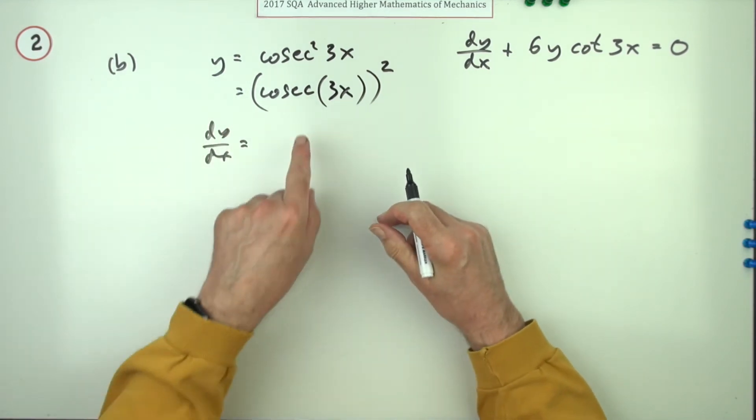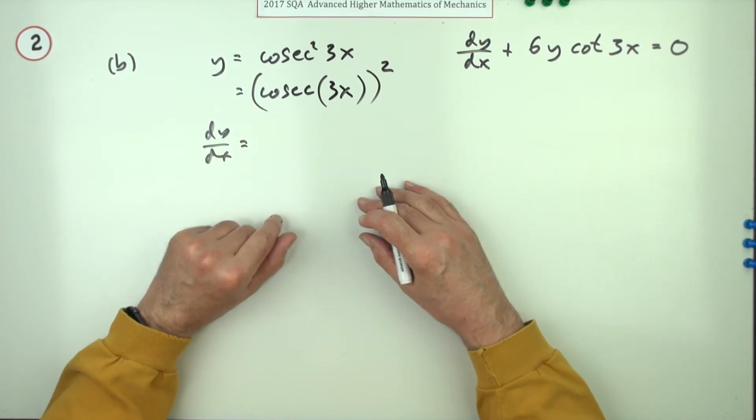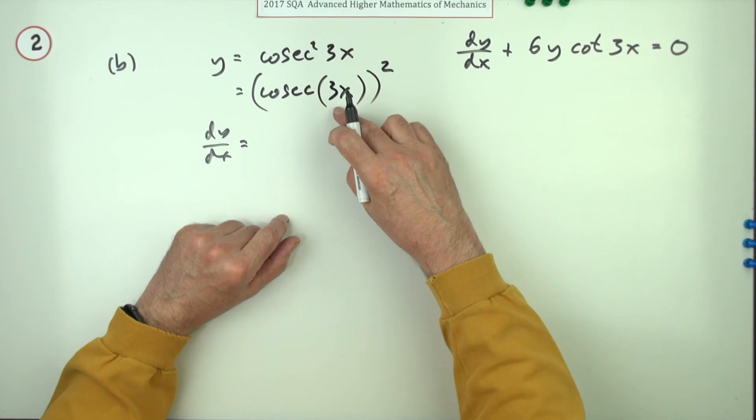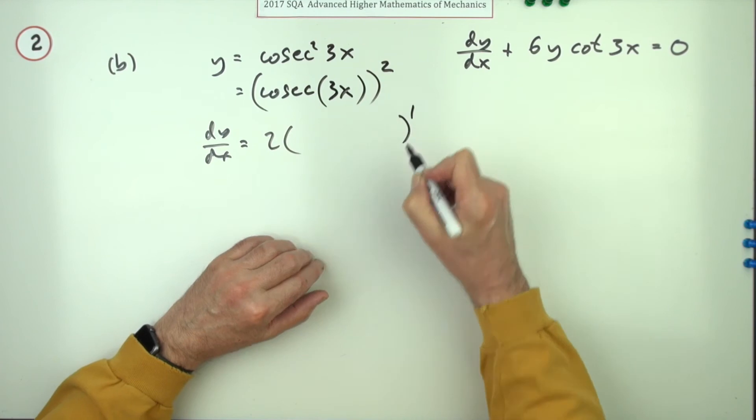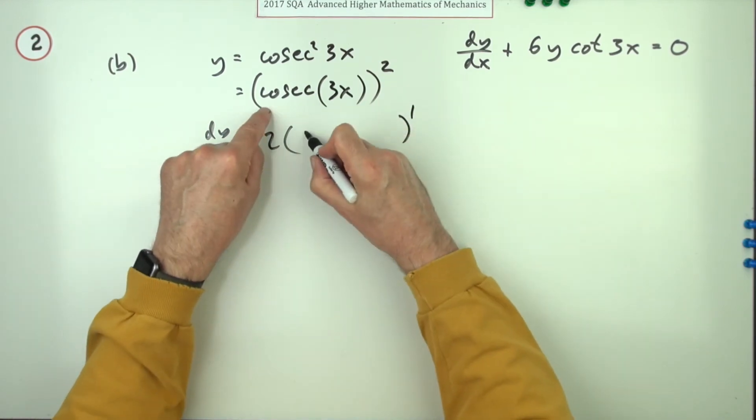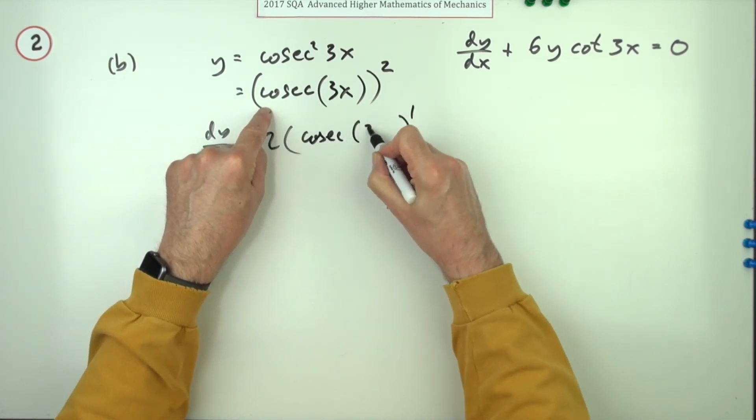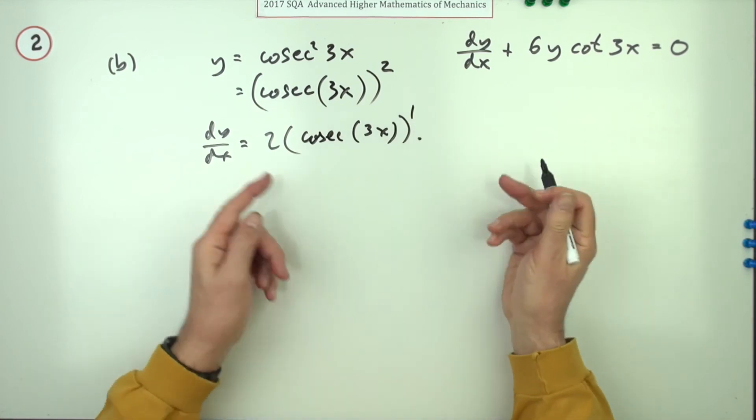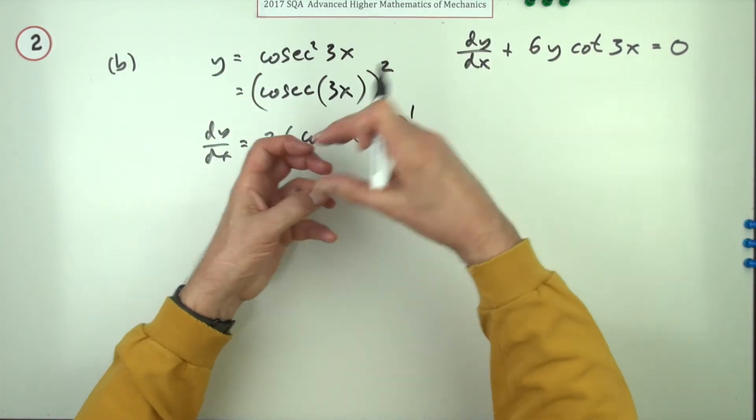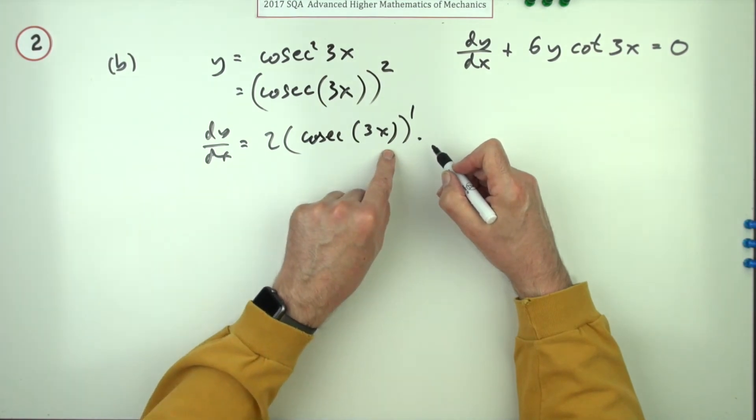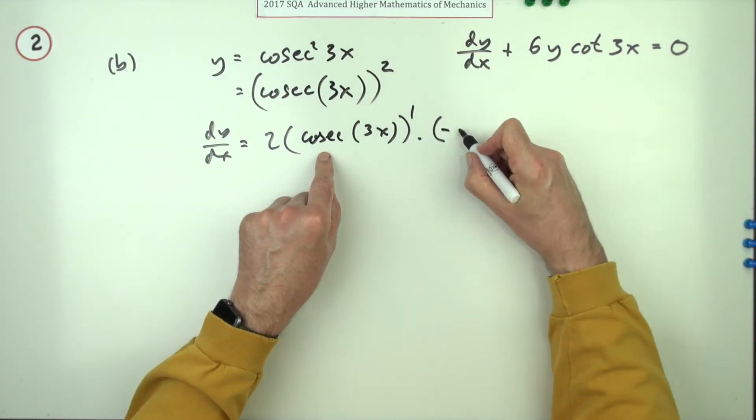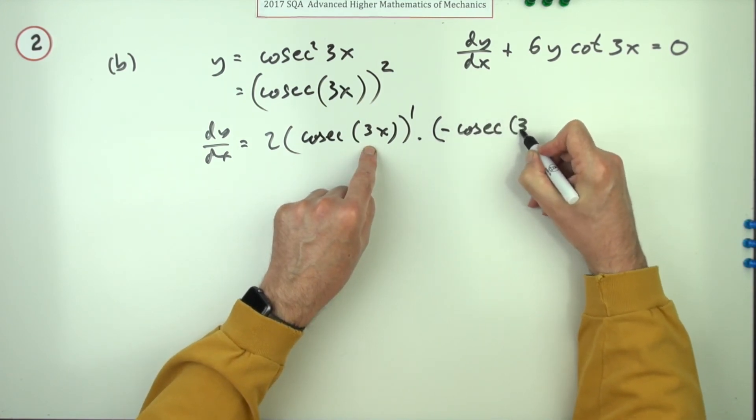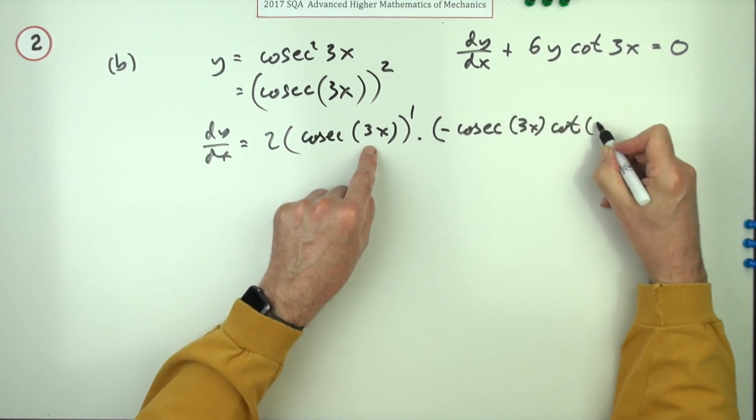So when you do the derivative it's going to be the chain rule with actually three links in it. In the marking scheme it says first application, second application, and they've thrown that three in, but that's strictly speaking a third application. So outside first, two times it to the power one and what was inside, cosec 3x, times now look inside, move in a layer, Russian dolls, pull the head off and look inside. Cosec, what's the derivative cosec? Unfortunately it's even worse than that, it's negative cosec whatever, cot whatever.